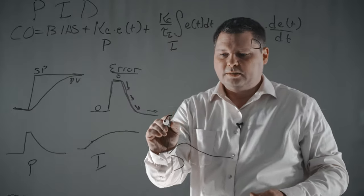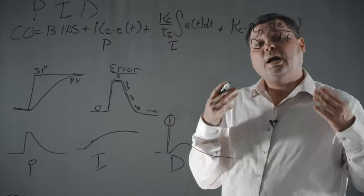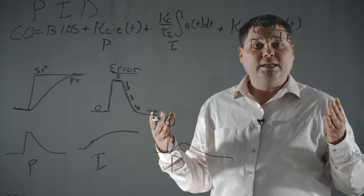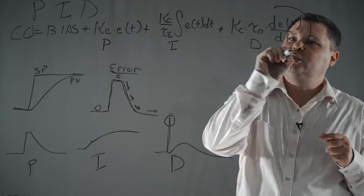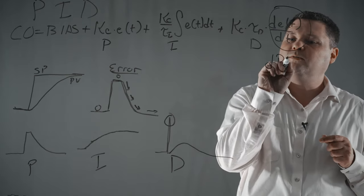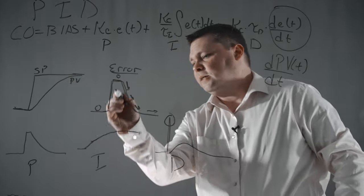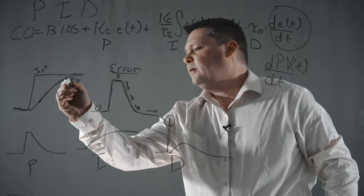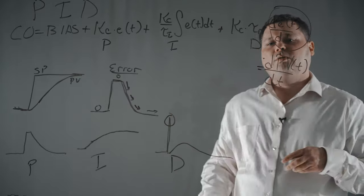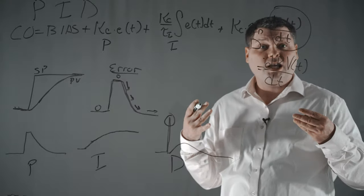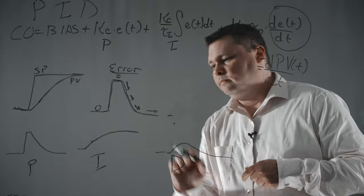This is called derivative kick, and you actually fix this in your controller by using an option called derivative on measurement. In all of your PID blocks, you have an option to switch from derivative on measurement versus derivative on error. What it does is change this term so you're looking at the rate of change of the measurement as a function of time instead of the error. Essentially, the derivative of error equals the negative derivative on measurement — so mathematically you can use them somewhat interchangeably, there's just a negative sign in front of it. And what that does is it gets rid of this derivative kick.